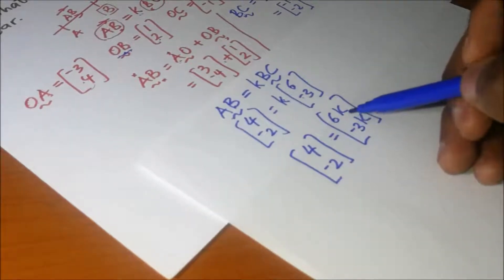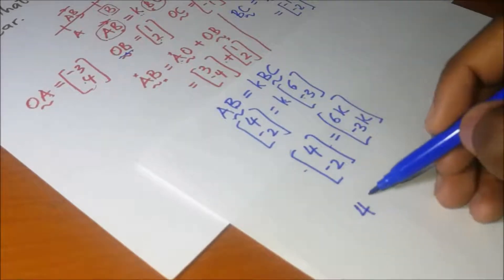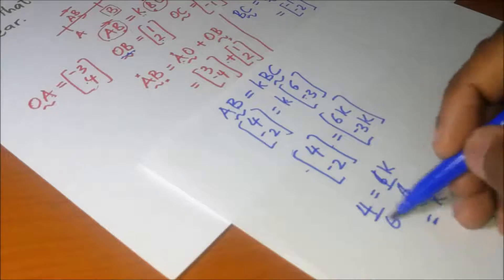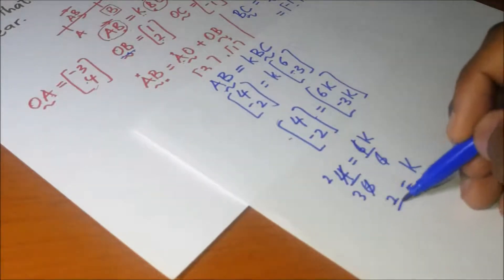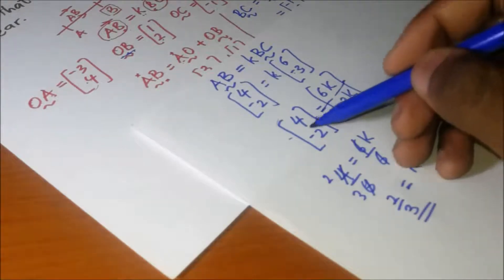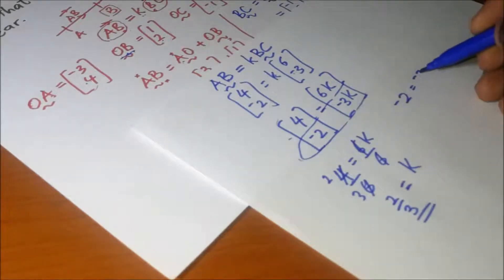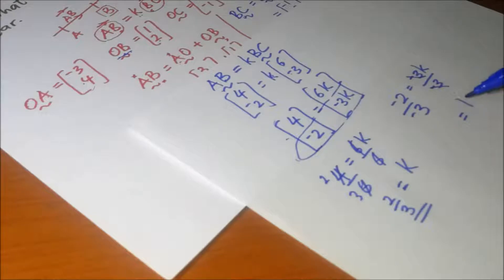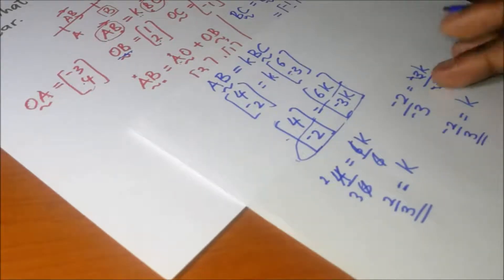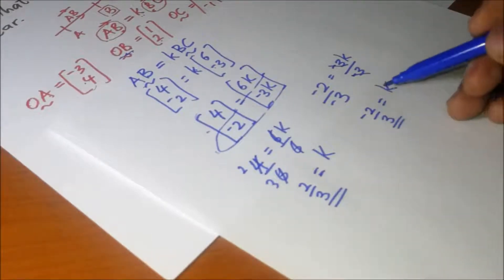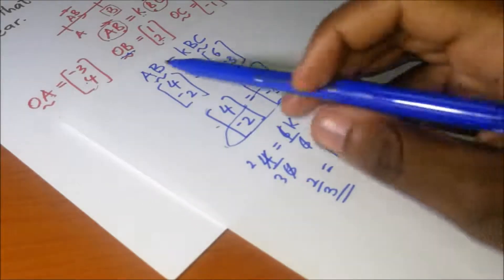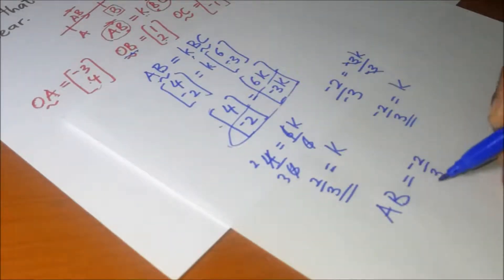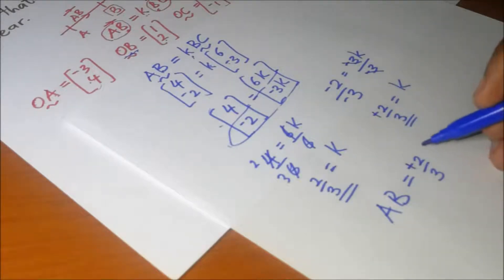Equating the top components: 4 = 6k, so k = 4/6 = 2/3. Equating the bottom components: -2 = -3k, so k = -2/-3 = 2/3. Both give the same value, so k = 2/3. Therefore AB equals (2/3)·BC.